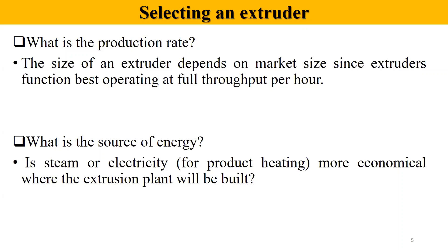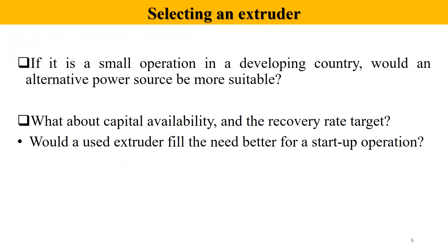Another factor is the source of energy. Steam and electricity availability determine what is most economical where the extruder plant will be built. In developing countries with small operations, an alternative power source may be more suitable. Where there is a load-shedding problem and no continuous electricity supply, this must be considered before installation.